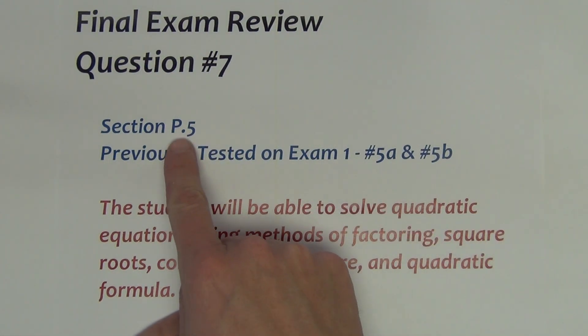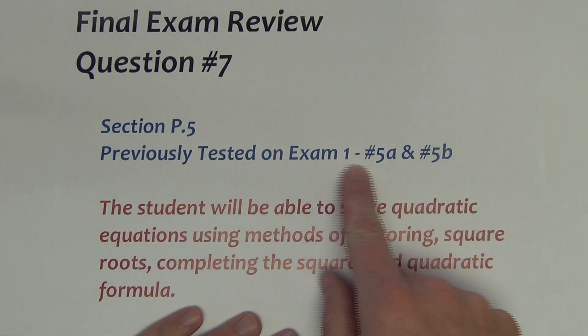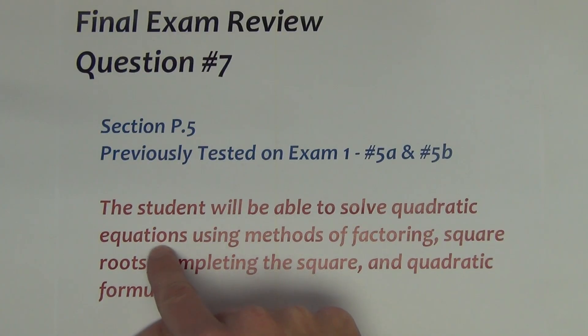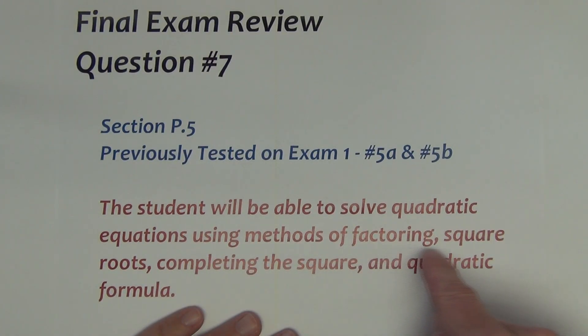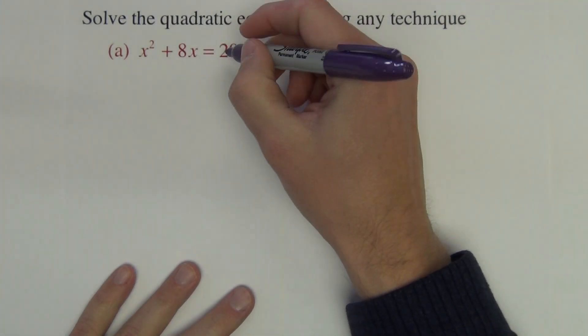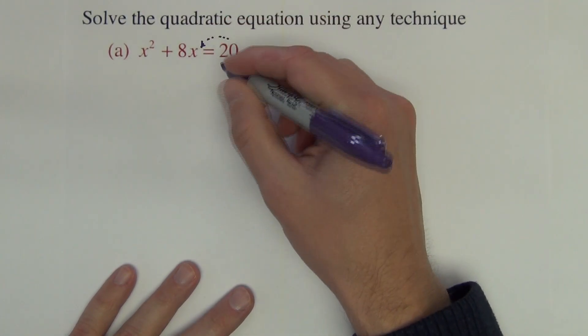Question seven on the final exam comes from section P5. It was previously tested on exam one, numbers 5a and 5b. This particular question is going to test if you can solve quadratic equations. And with quadratic equations, we have a variety of methods like factoring square roots, completing the square, quadratic formula. So you need to know probably all these techniques and then when is it best to use each of these techniques for this particular question. So the directions say solve the quadratic equation using any technique. The first thing I do with all quadratic equations is I make them equal to zero.